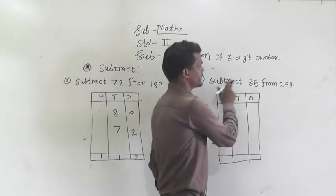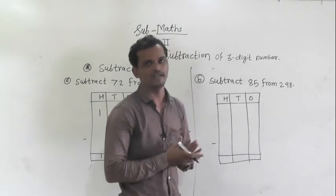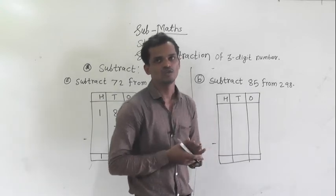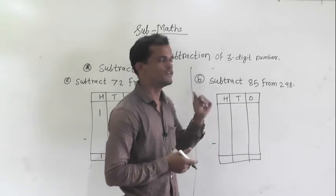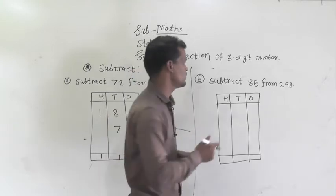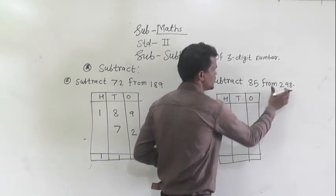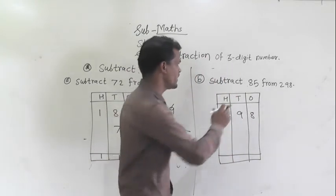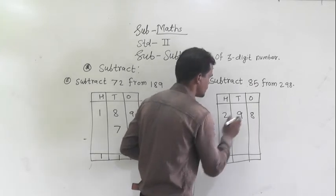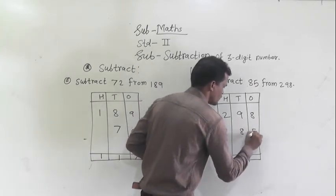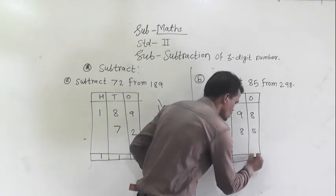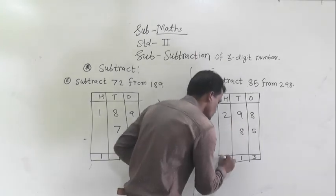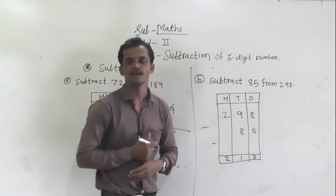Next example: subtract 85 from 298. First decide which is the greater number, then write the smaller number under the greater number. 298 is the greater number because it has 3 digits, so write it on top and write 85 under it. Then: 8 minus 5 is 3, 9 minus 8 is 1, and 2 minus 0 is 2. So 213 is the answer.